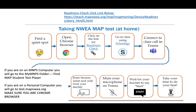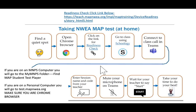Taking the NWEA MAP test at home — what exactly is this going to look like for our students? First, if you have a chance, do the readiness check just to make sure that your laptop or computer is good to go. Open up your Chrome browser and use this link, which will also be uploaded into the Enrichment Hub. That is a way for you to do a simple readiness check to make sure that your browser and everything is ready to go.